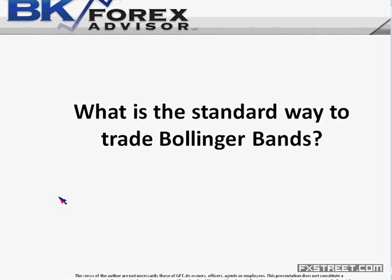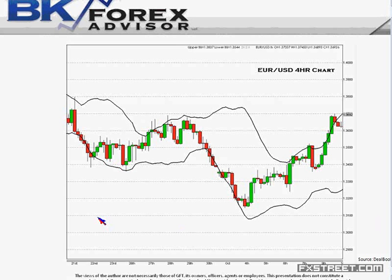Let's go back to our technicals and our trading strategy. What is the standard way to trade Bollinger Bands? Bollinger Bands help us measure consolidation or expansion of markets. If they're really tight, that tells us we're in a consolidated mode and may have a breakout. If they're really wide, that tells us we're in a trending mode. They're also considered an overbought/oversold signal. In a traditional use of Bollinger Bands, if the currency pair touches the lower band it's considered oversold; if it touches the upper band, it's considered overbought.